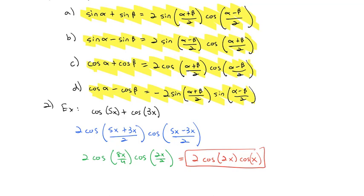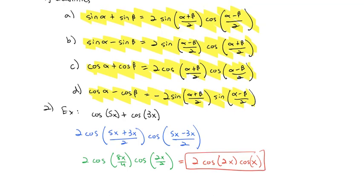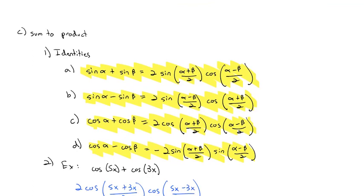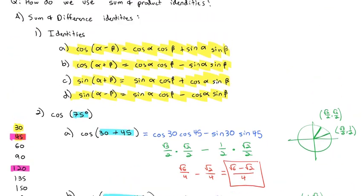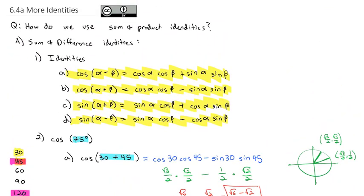This video was a little shorter than the last one where we derived all of these formulas, but it shows how we can use the formulas to simplify or evaluate problems. We've got sum-to-product identities, product-to-sum identities, and sum and difference identities to practice with. We're going to look at how we can use these identities to help with solving equations and simplifying identities in another video, but right now let's get comfortable with using them and recognizing how we can apply them. Let me know if you have any questions.